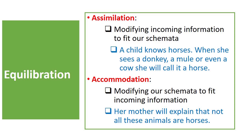Accommodation is when we modify our schemata or our prior knowledge to fit new information. In our previous example, accommodation happens when the mother explains that these animals are not horses. Thus, the child modifies her prior knowledge or schemata to fit or accommodate new information.